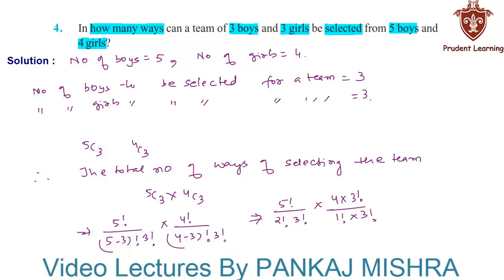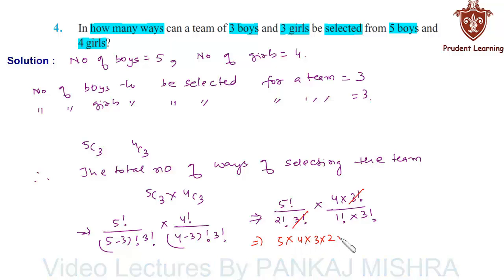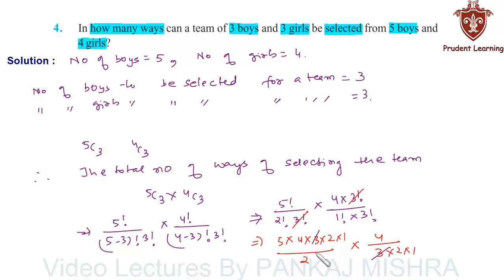Here we can cancel 3 factorial from the numerator and denominator. So we have 5 factorial, that is 5 into 4 into 3 into 2 into 1, over 2 factorial — which is 2 itself — into 4 over 3 factorial, which is 3 into 2 into 1. Again we can cancel 3 and we can cancel 2, so we have 5 into 4 is 20, 20 into 4 is 80, upon 2, that is 40.